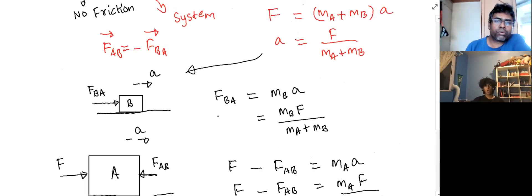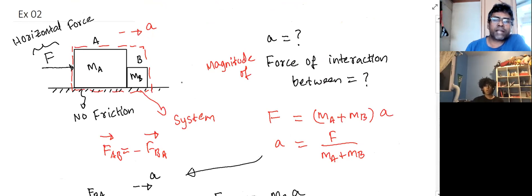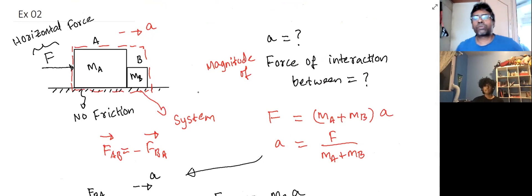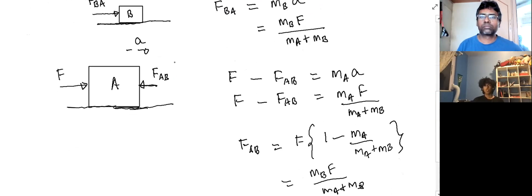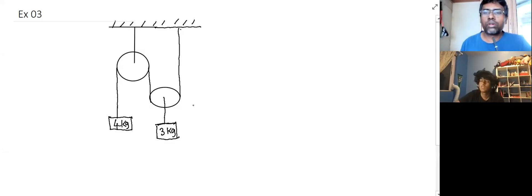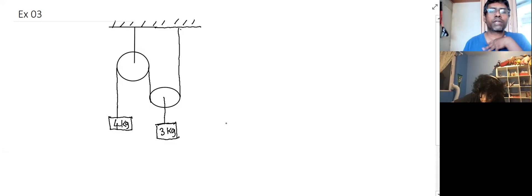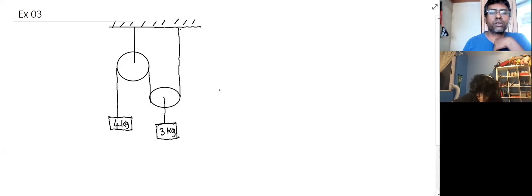Are there any other forces acting on A and B? Yes, gravitational force and normal force — but the gravitational force is balanced by the normal force, and we are not interested in the vertical direction. In this new problem, there are two blocks and two pulleys, both massless. The string is massless and inextensible. Your task is to find the acceleration of the blocks and the tension in the string.